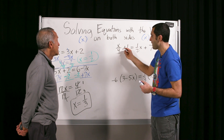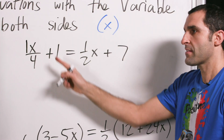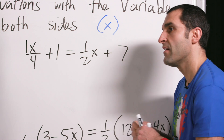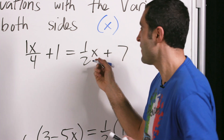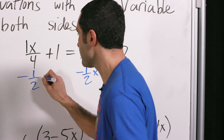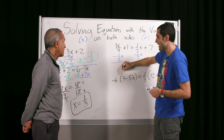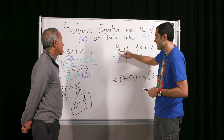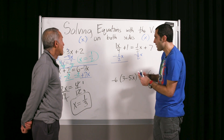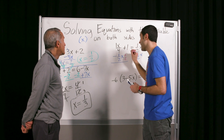So x over four — if I put a one here, this is one-fourth x. What do you want to do to both sides? Minus half x. I want a common denominator, right? Four, yes. So how many fourths will this be? Two fourths. Multiply top and bottom by two, and we'll get fourths — that results in negative two over four, so negative two x over four.